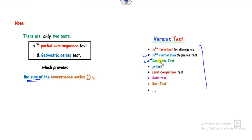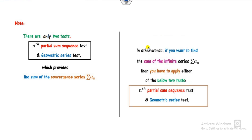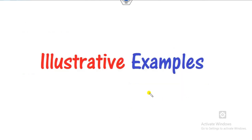Remember: whenever you apply any of these tests, only two of them — the nth partial sum sequence test and the geometric series test — will provide you the sum of the convergent series. The rest of the tests only tell you whether a series is convergent or divergent. So whenever you want to find the sum of an infinite series, you must apply either of these two tests.